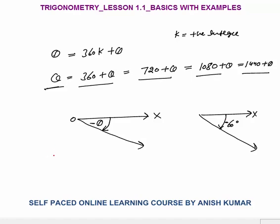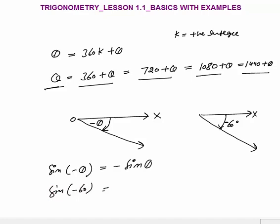The first thing we need to learn is that sine of minus theta — the sine of a negative angle — is always equal to minus sine theta. For example, sine of minus 60 will be equal to minus sine 60, and we know that sine 60 is equal to root 3 by 2, so the answer would be minus root 3 by 2.